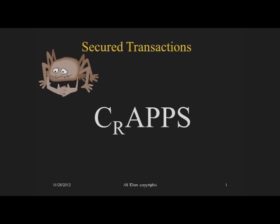The first stage is creating a security interest. The second is that the security interest must attach to the collateral. Third, the security interest is perfected. Fourth, security interests are prioritized — they are ranked. And if default occurs, then S becomes relevant: either a sale foreclosure or a settlement foreclosure. This one word sums up all the stages of a secured transaction.